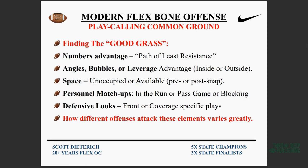All offenses — whether you're a very traditional base like a split-back veer team, wing-T, or wide-open spread — are all looking for common ground: finding the good grass. You're looking for a numbers advantage, the path of least resistance, some kind of angle, bubble, or leverage advantage inside or outside the box. We're looking for space — unoccupied or available both pre- or post-snap — personnel matchups in the run or pass game, and defensive looks, fronts you can attack or stay away from, and coverage-specific looks. Different offenses attack these elements differently, but we're all looking for the same things.